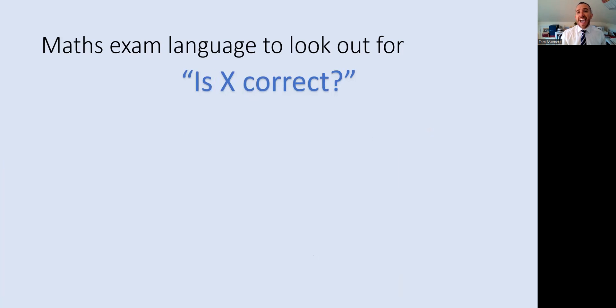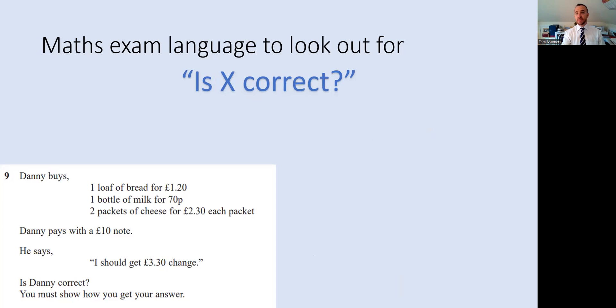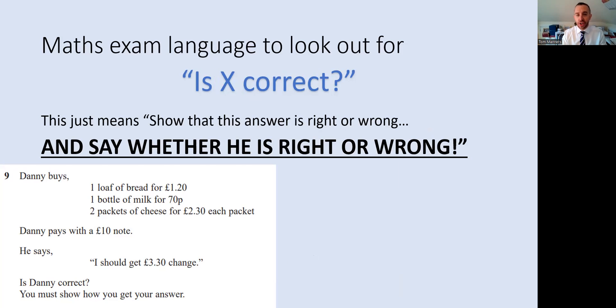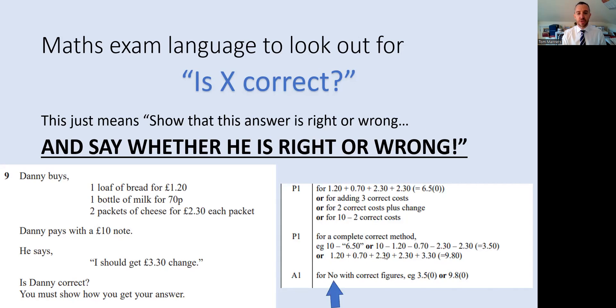You might get this in a question: Is X correct? So in this instance, is Danny correct? He's gone shopping, bought a loaf of bread, milk, et cetera. Is Danny correct? It also says you must show how you got your answer. This just means show that the answer is right or wrong. Danny has said three pounds thirty worth of change. Show this right or wrong. But here's a point that a lot of people don't realize: Say whether he is right or wrong. That is so key. Let's look at the mark scheme. The answer mark is only given if you state yes or no with the figures.